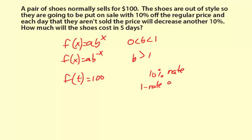or 90%, or 0.9. So our b is 0.90. And that'll be put to the t.